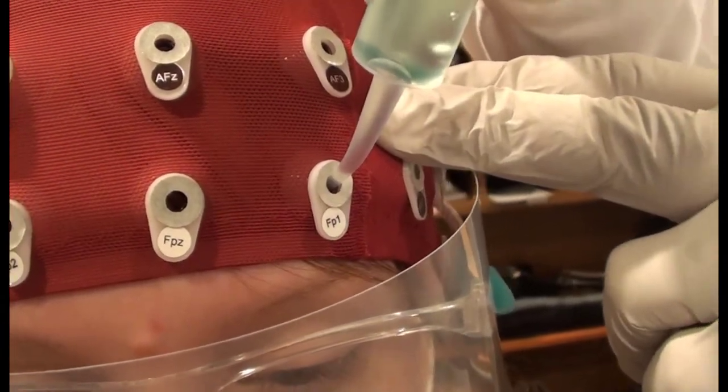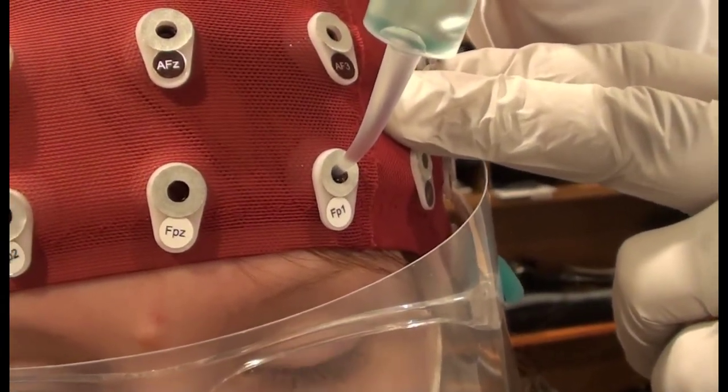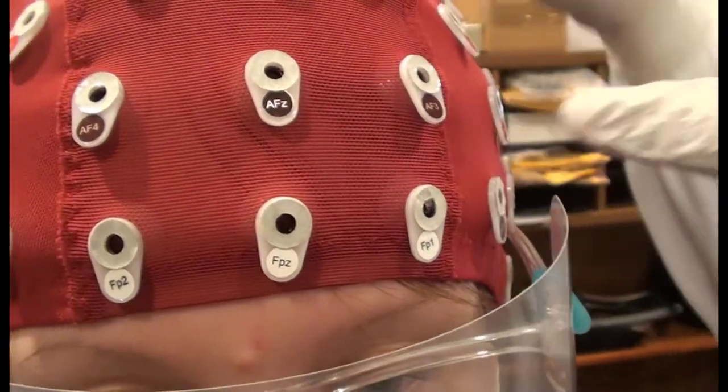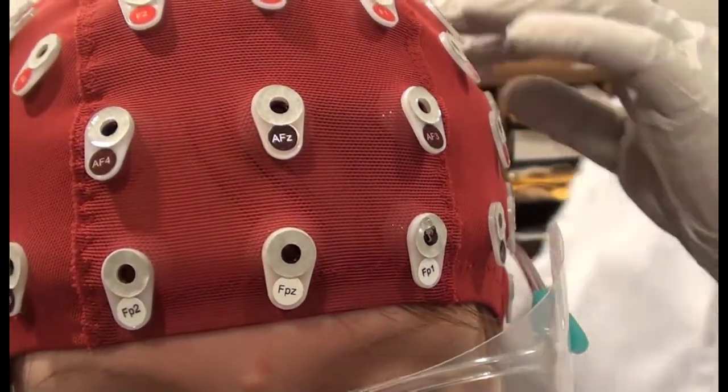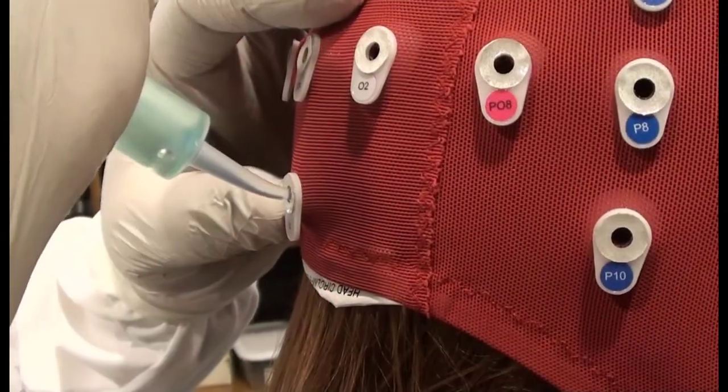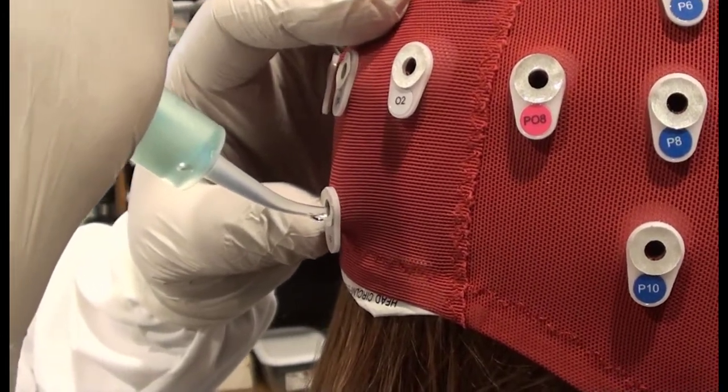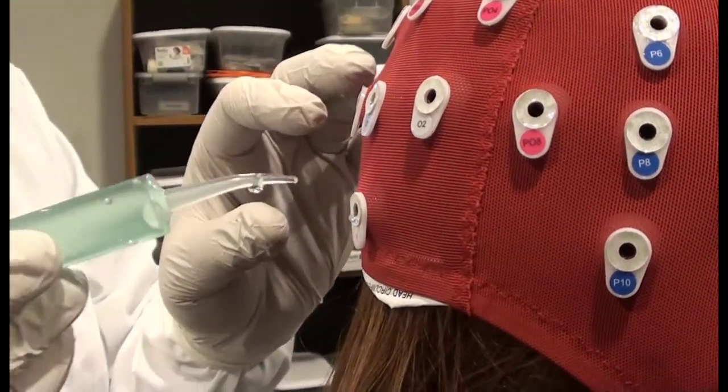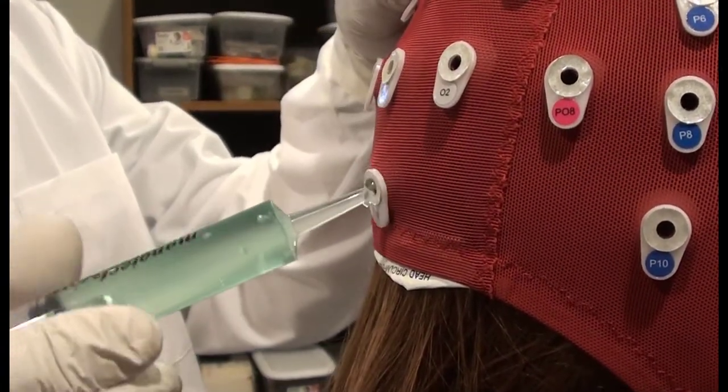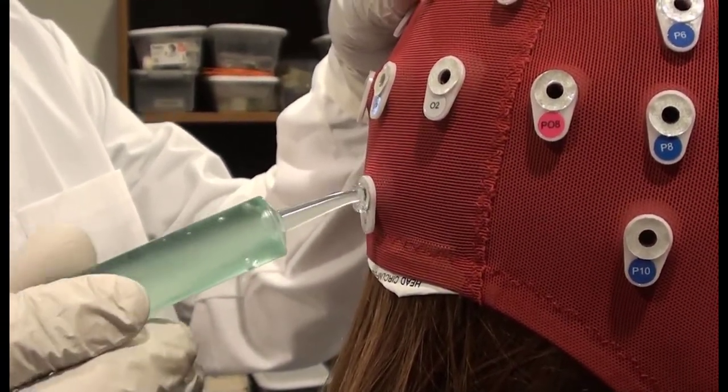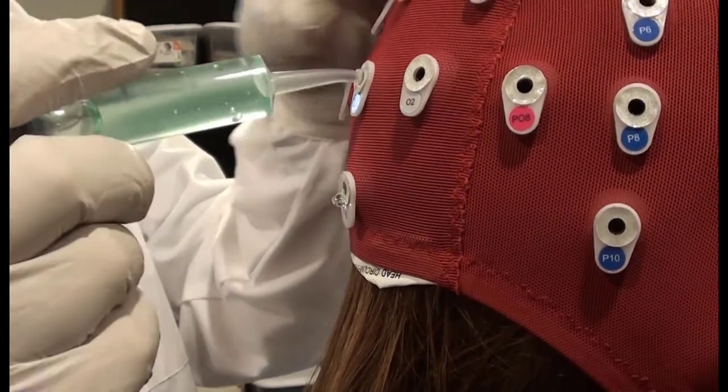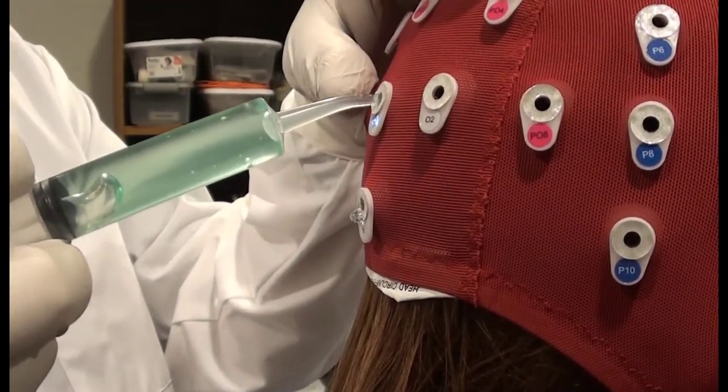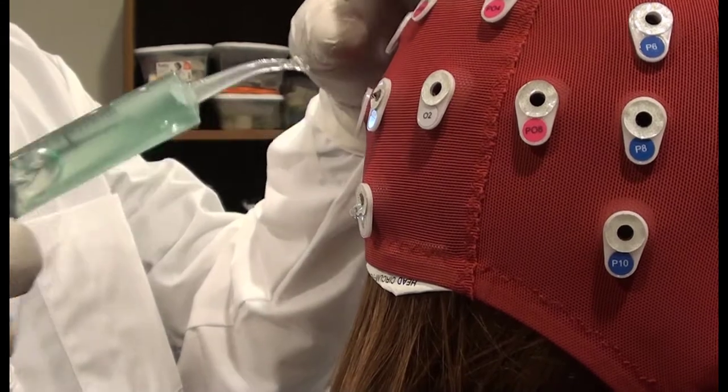Applying gel to the cap requires some technique and developing technique requires practice. Don't expect to do this perfectly the first time. I recommend starting by applying gel at a frontal site where the participant will feel it. Insert the syringe tip almost to the scalp and inject enough gel that you can see it squirt back out of the holder. Ask them if they felt the gel on their skin. If they say no, try again. If they say yes, move to a location at the back of the cap where you believe their hair is thickest.